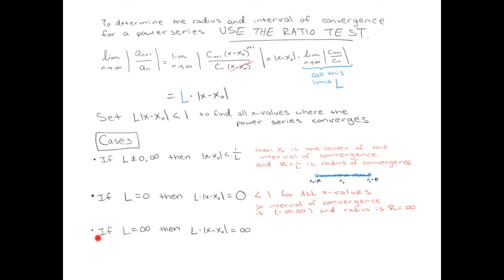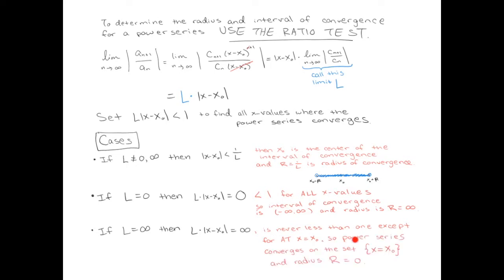Finally, there's one more case: suppose the value of this limit l was infinite. You can never get infinity to be less than 1. So unfortunately in this case, the interval of convergence is just a single number, x equals x_0. It's not even an interval, and the radius is 0.